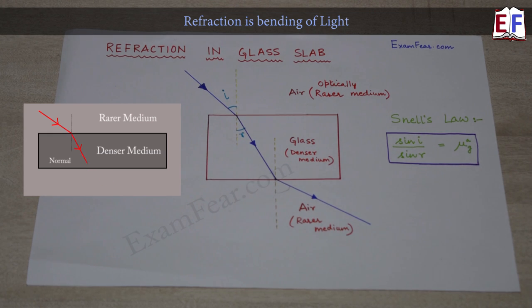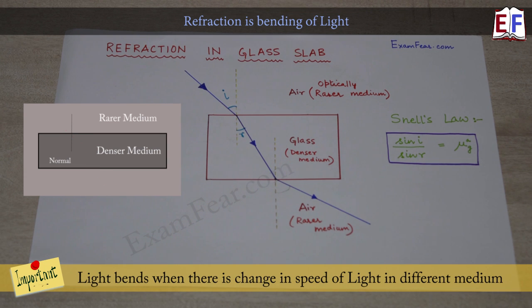Whenever we study refraction, we learn that refraction is bending of light. When light enters from one medium to another, like in this case when light enters from air to glass, there is a change in medium. We say that there is a change in the speed of light because of which it bends.